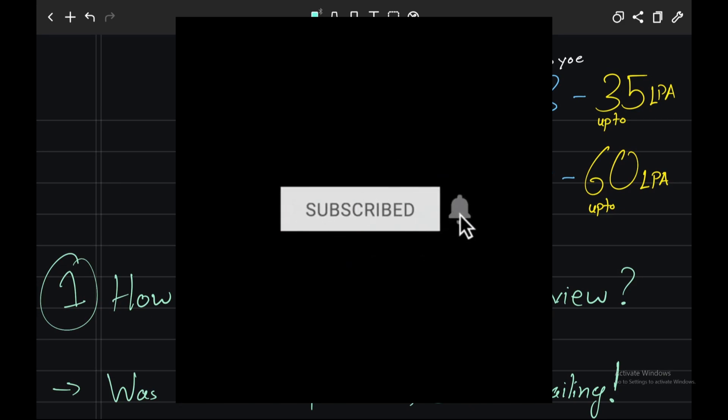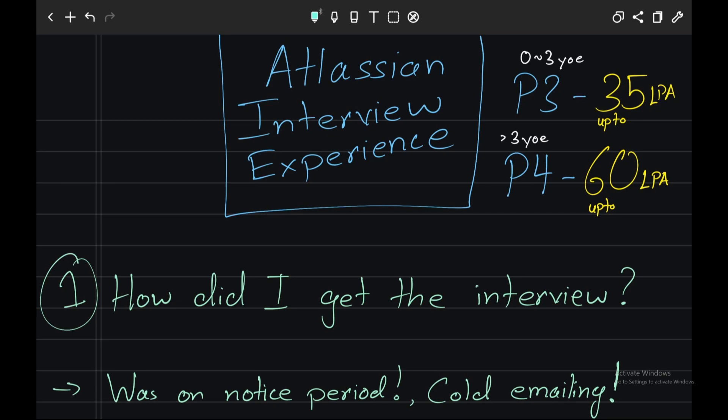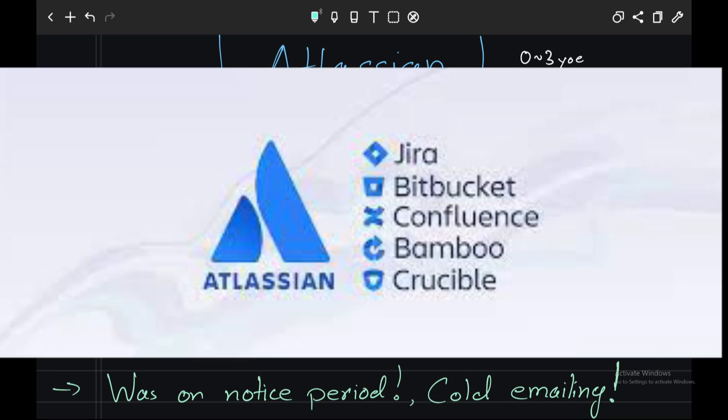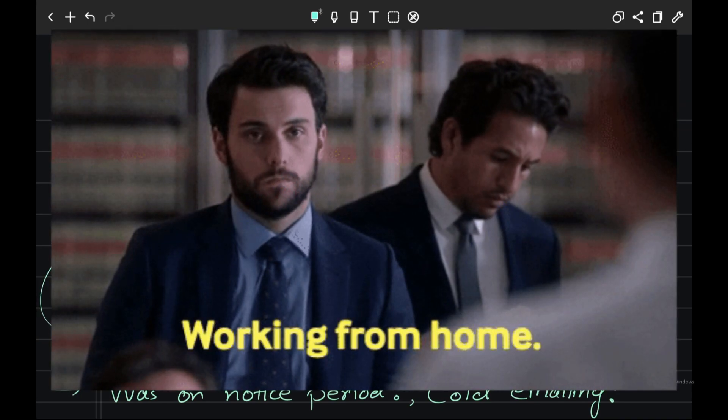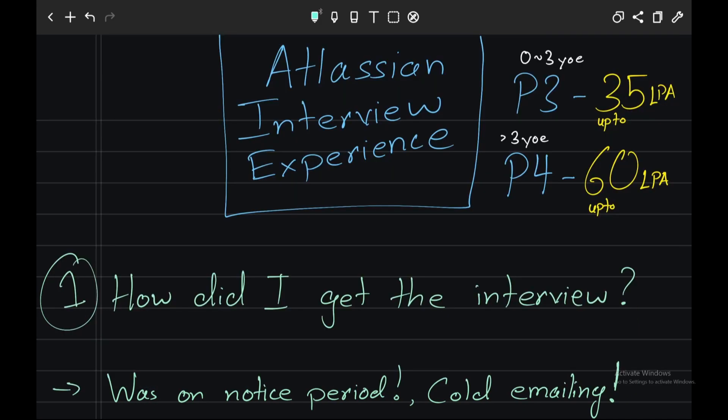If you don't know about the company Atlassian, it is the company which made Jira, Bitbucket, and Confluence and is one of the companies with best work-life balance and also offers permanent remote to all its employees. The salary for an entry-level engineer can be up to 35 lakhs and a person with 3 years or above can get up to 60 lakhs.